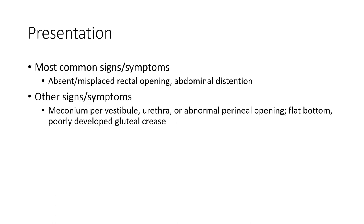Presentation: the most common surgical signs and symptoms are an absent or misplaced anal opening and abdominal distension. Other signs and symptoms include meconium in the vestibule or urethra, an abnormal perineal opening, flat buttocks, and poorly developed gluteal muscles.